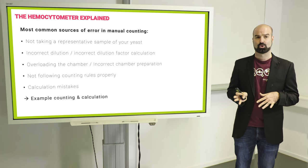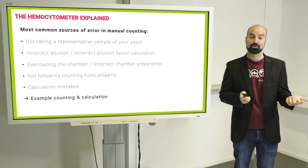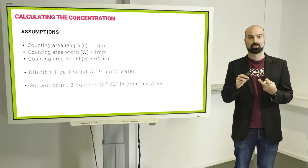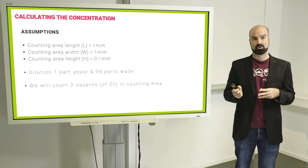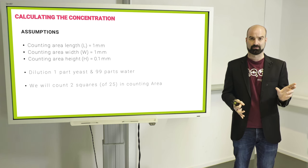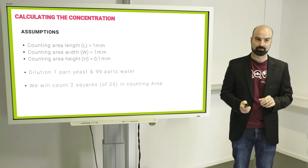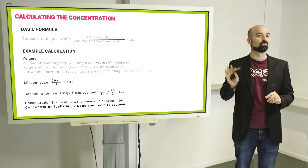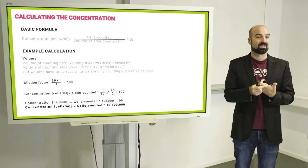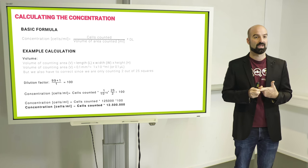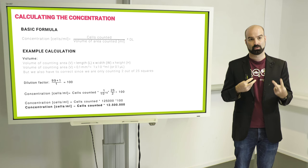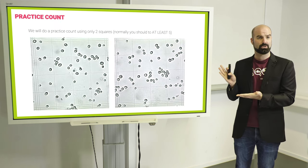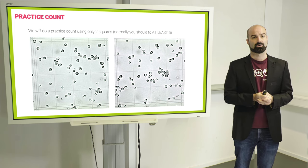Now we'll do an example just to show how counting and calculation works and where errors can happen. So these are the assumptions. Your Thoma chamber or hemocytometer has a length and width of one millimeter and a height of 0.1 millimeters and you dilute it with one part yeast and 99 parts water and you will only count two squares of the 25 in your counting area, which is actually too little, but we'll do it for this example. You should be counting at least five if not more. Now I will not go into each detail of the breakdown, but you can pause the video and look into it. It's not that complicated, but you can see that there are quite a few sources of error. What we end up with in this case is that whatever you counted in these two squares, you should multiply by 12.5 million to get your concentration in cells per milliliter.